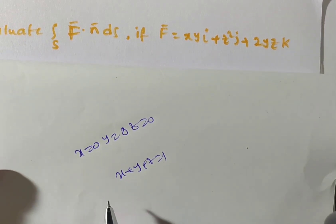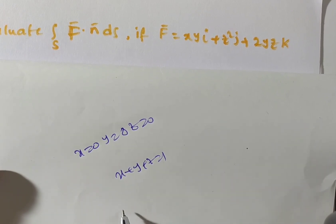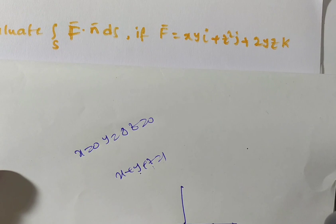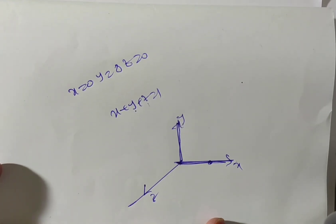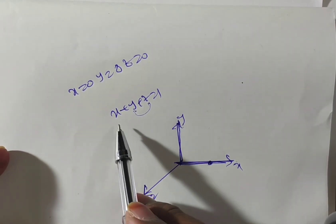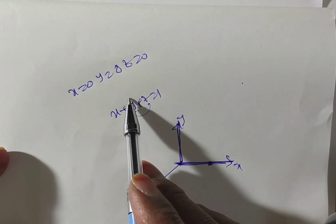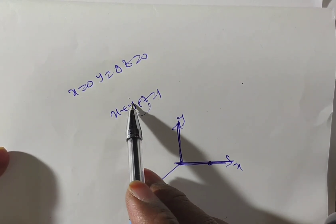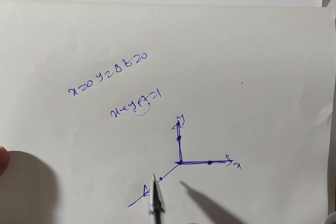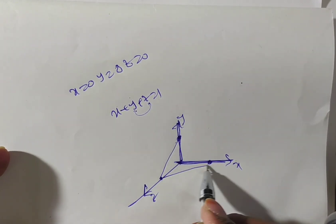On the x-axis, y and z are 0, so x = 1. On the y-axis, x and z are 0, so y = 1. On the z-axis, x and y are 0, so z = 1. This forms our tetrahedron. We have to evaluate the surface integral over this tetrahedron, from 0 to the plane x + y + z = 1. For a cube we'd take limits 0 to 1 for all, but here it's a tetrahedron, so we need to find proper limits.